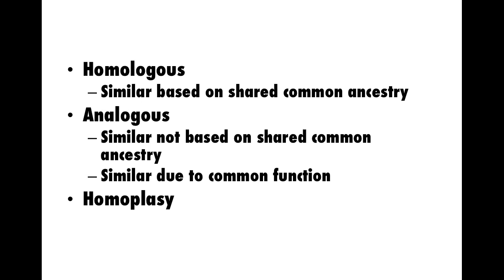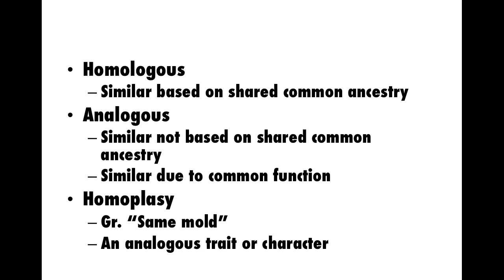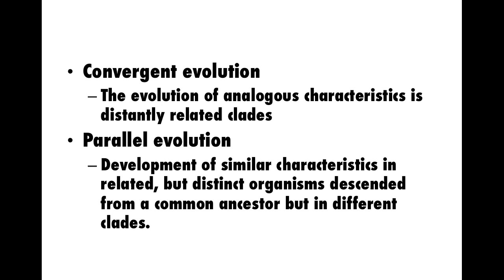An analogous characteristic we can say is homoplasius, which comes from the Greek word meaning 'same mold.' An analogous characteristic or trait is a homoplasy. Convergent evolution is the evolution of analogous characteristics in distantly related clades. We might say unrelated clades, but we know that all life is related, so we can say that they are relatively distantly related.